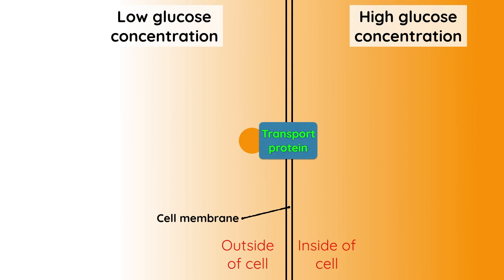This is what ATP is used for. ATP gets broken down at the transport protein, and this releases the energy to move the glucose molecule.